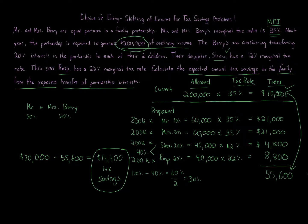Beyond tax and business considerations, you also have to think about family dynamics and psychological issues with family planning. For example, you might want to give Straw more interest than Rasp if Straw is a better business person, but giving unequal shares could create conflict between the two children. There are all different types of issues to consider. From a tax standpoint, to answer the question: the expected annual tax savings to the family from the proposed transfer of partnership interests is $14,400.